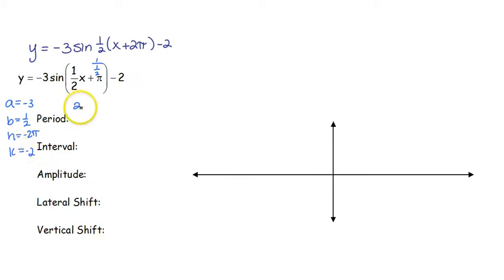So what that all means, we have our 2π divided by our b, 1 half, giving us a period of 4π. We divide that by 4 to get that each interval is going to be π. Our amplitude is 3 because it's the absolute value, but because this is negative, I can't forget that I have to flip my graph. The lateral shift, it shows a positive 2π, but we go the opposite way, so that's going to be left 2π.